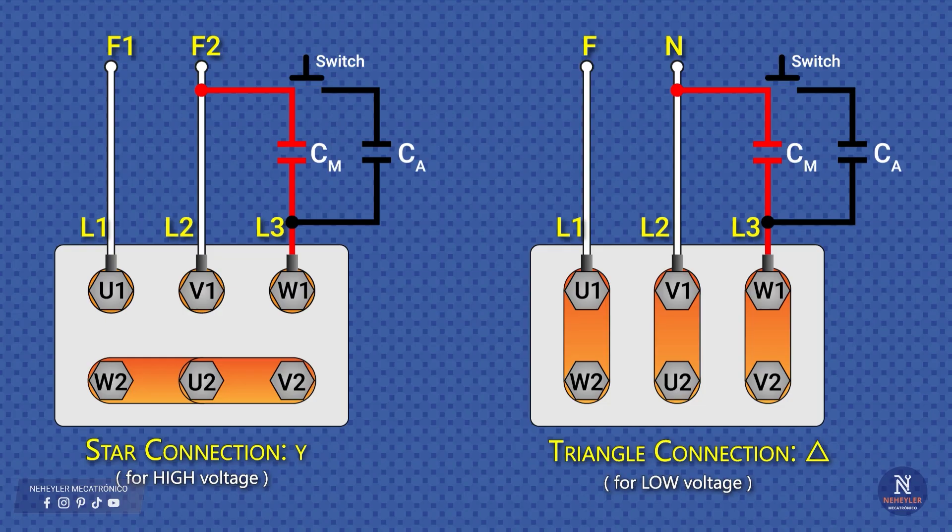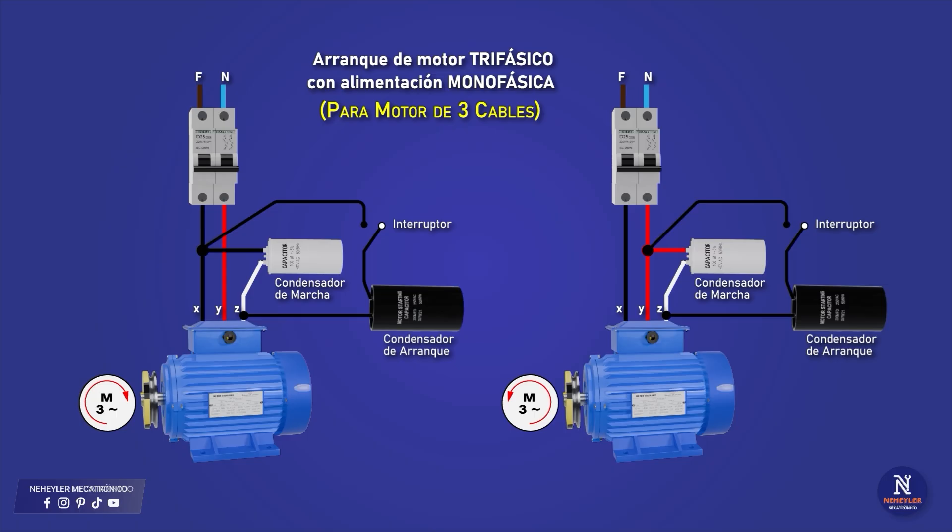Pay attention to this detail. The capacitor can be connected at any of the three motor terminals and then joined to the line or to the neutral. The only thing that changes is the rotation direction of the motor. On this channel we already have a video where we explain in detail this configuration, showing step by step how to reverse the motor direction with capacitors.